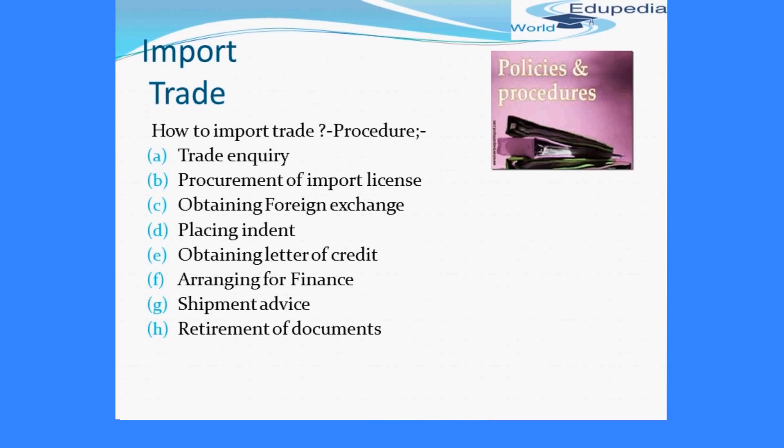These documents are delivered to the importer only when they accept the bill of exchange, which is sent along with the above-mentioned documents. A bill of exchange can be of two types: document against sight and document against acceptance. In document against sight, documents are handed over only against payment. In document against acceptance, documents are delivered to the importer when they accept the bill of exchange and agree to make payment on maturity.